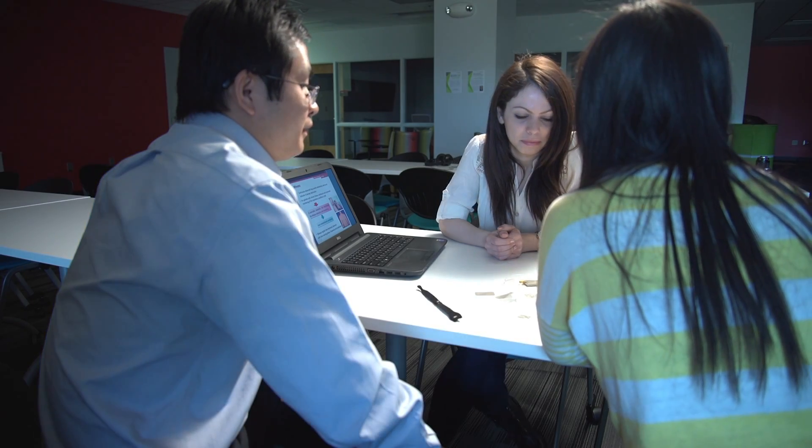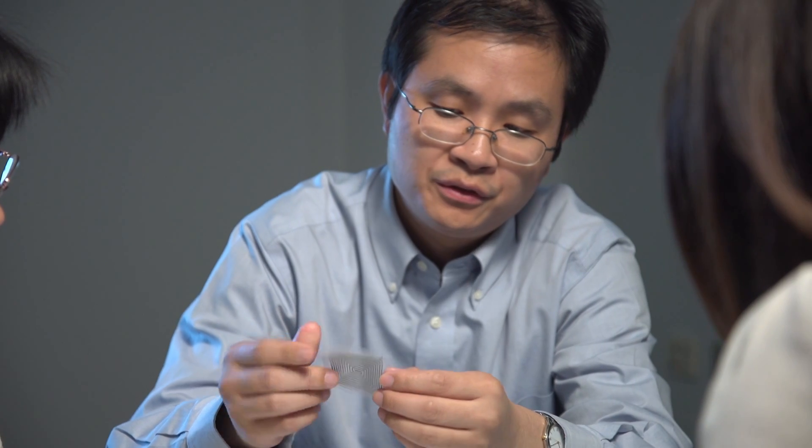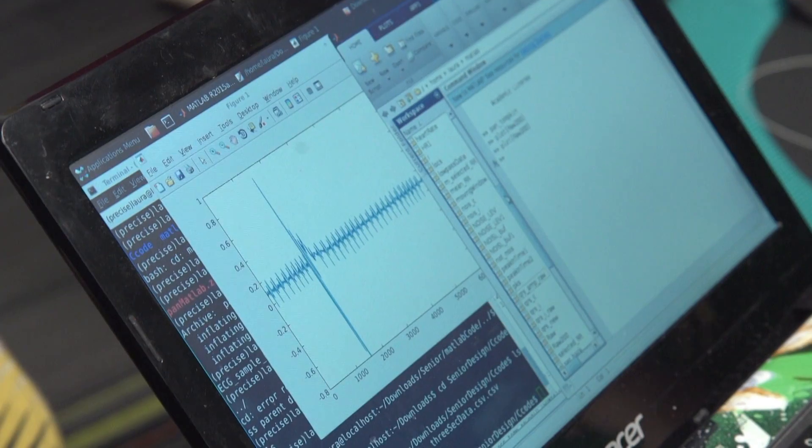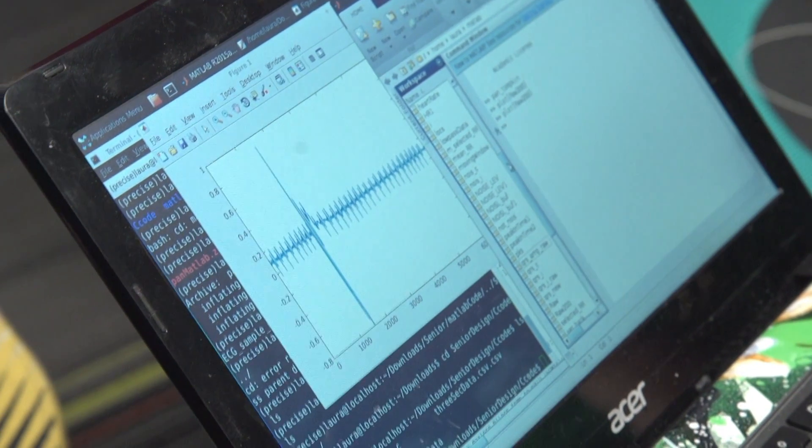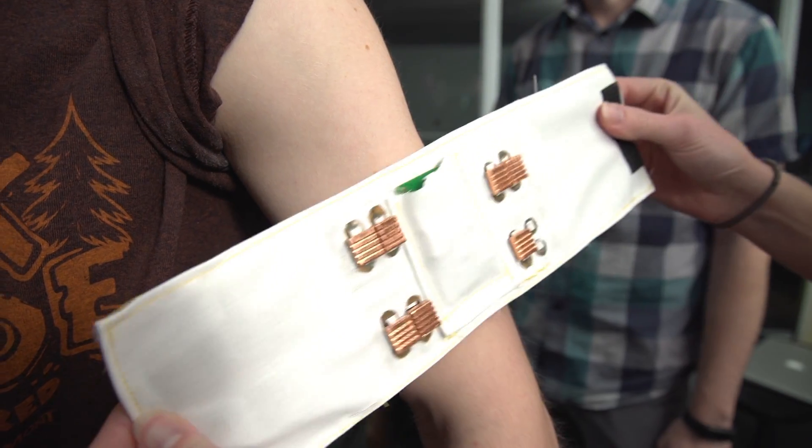ASSIST stands for Advanced Self-Powered Systems of Integrated Sensors and Technologies. In our research, we are maximizing the power available from the human body, which is upwards of 200 to 300 microwatts. An example would be a sensor system you wear that monitors your respiration or your EKG, and at the same time monitors ozone in the environment. If someone is asthmatic, they can immediately understand if they're in an environment where ozone levels are too high.